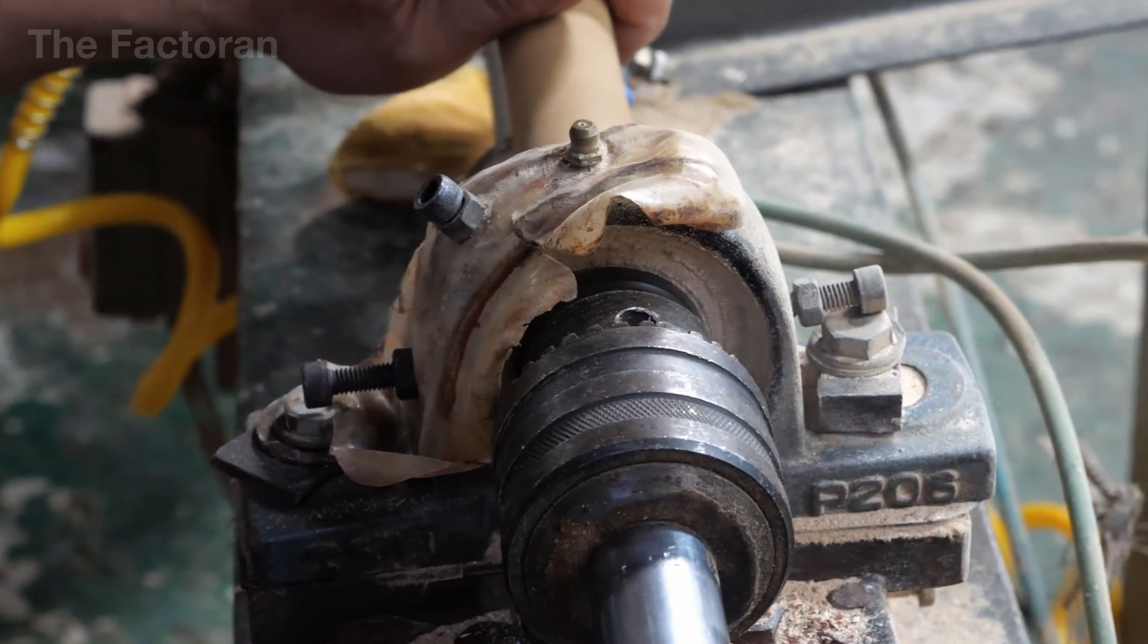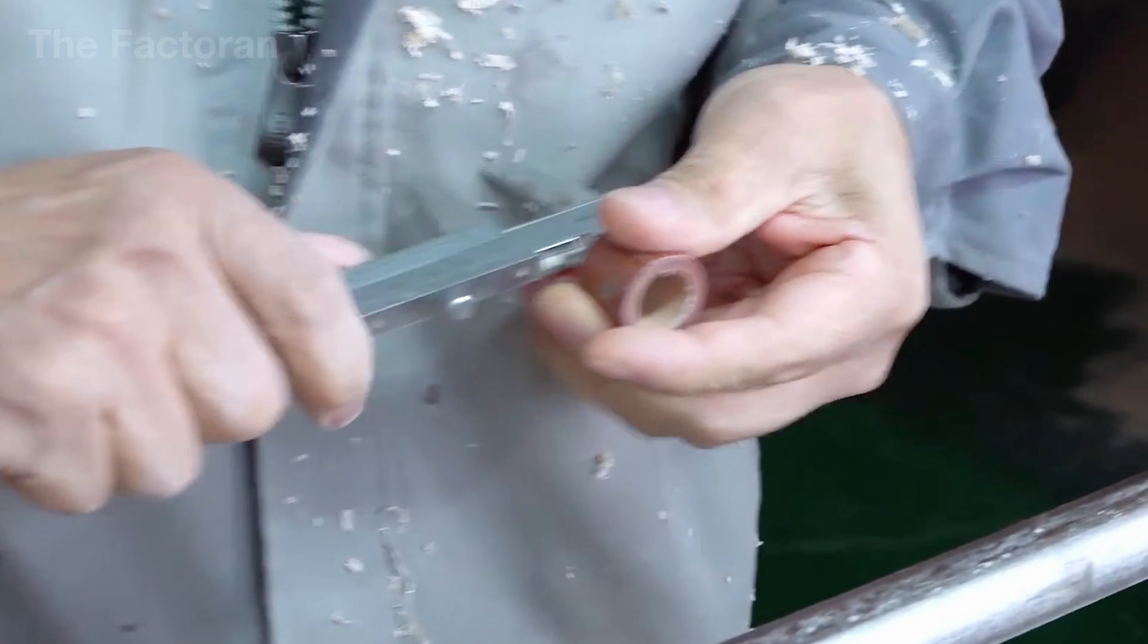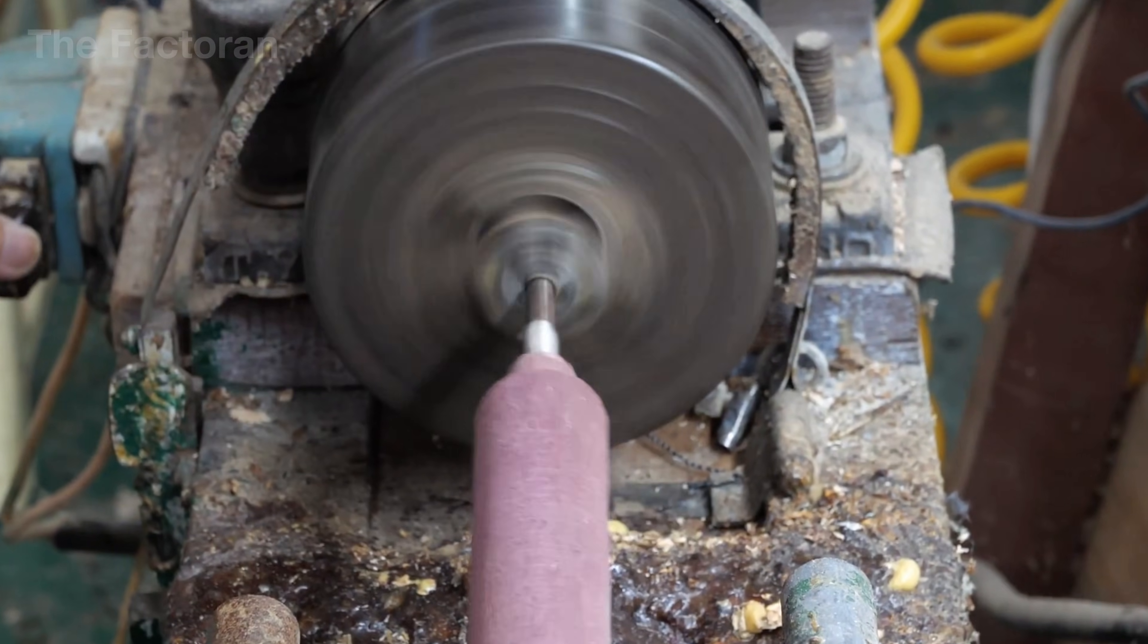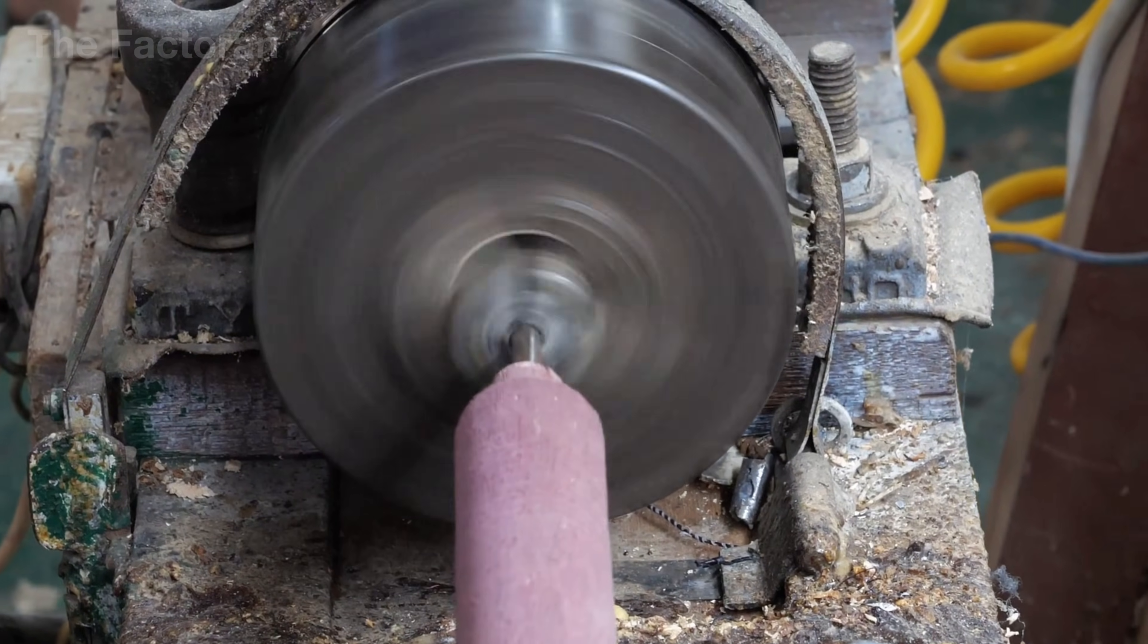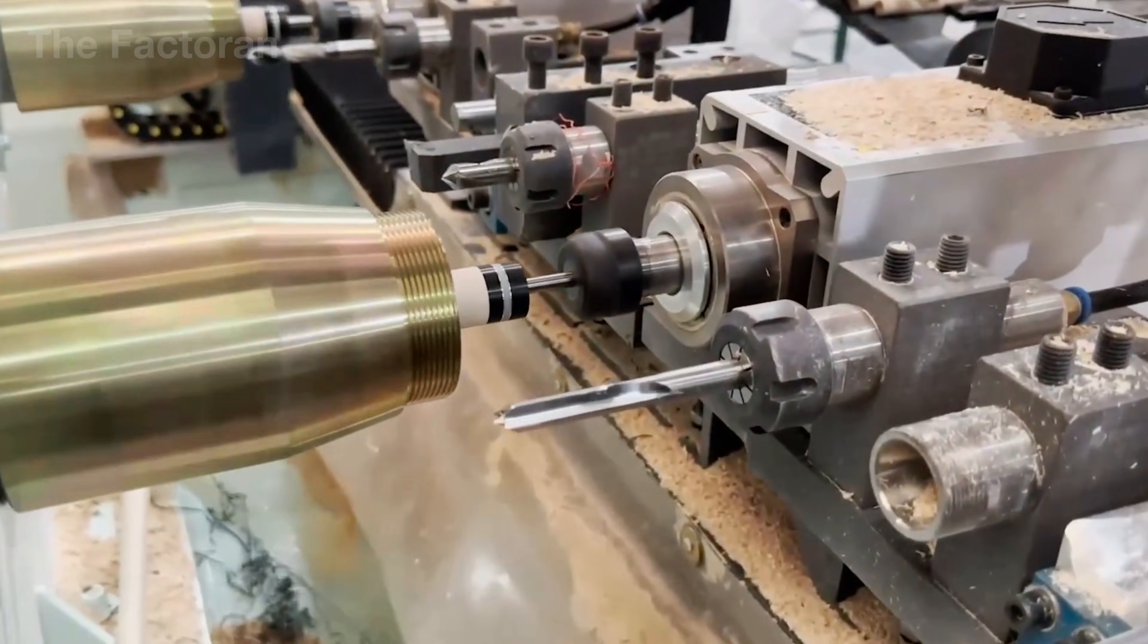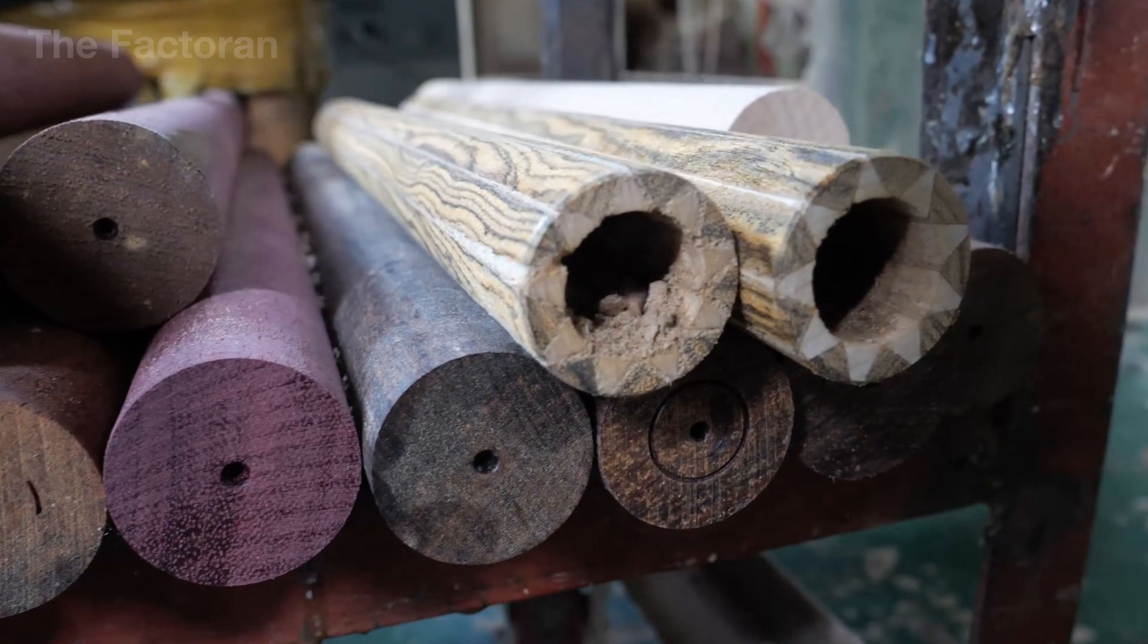Finally, the sleeve is produced. It is bored hollow on the lathe and cut to its exact final length. When all three parts are assembled, they form a perfectly aligned, precisely balanced cue butt ready for the next stages of finishing.